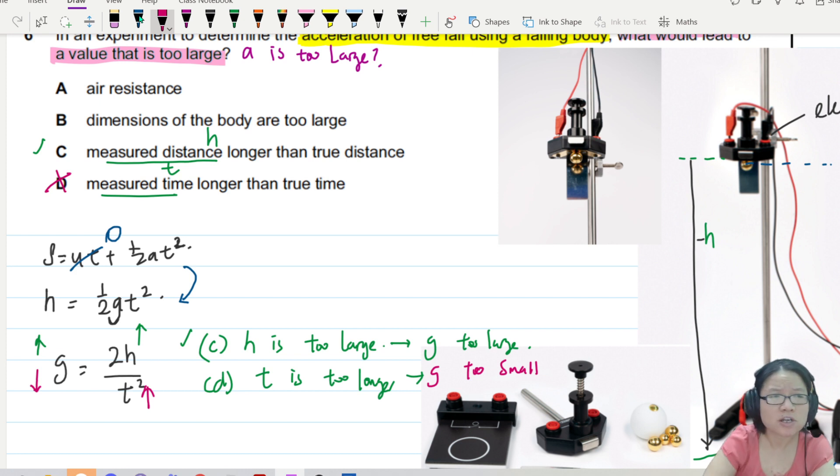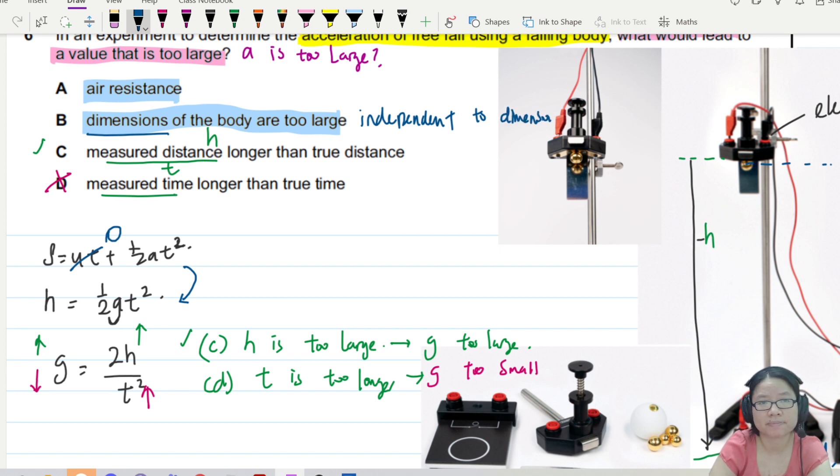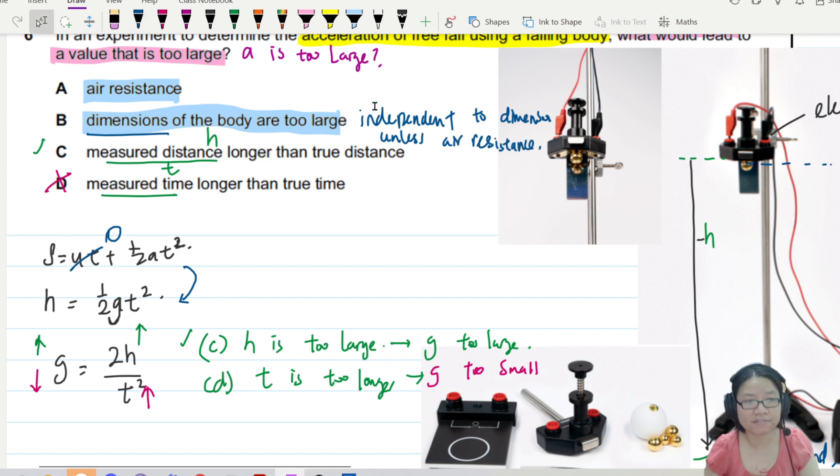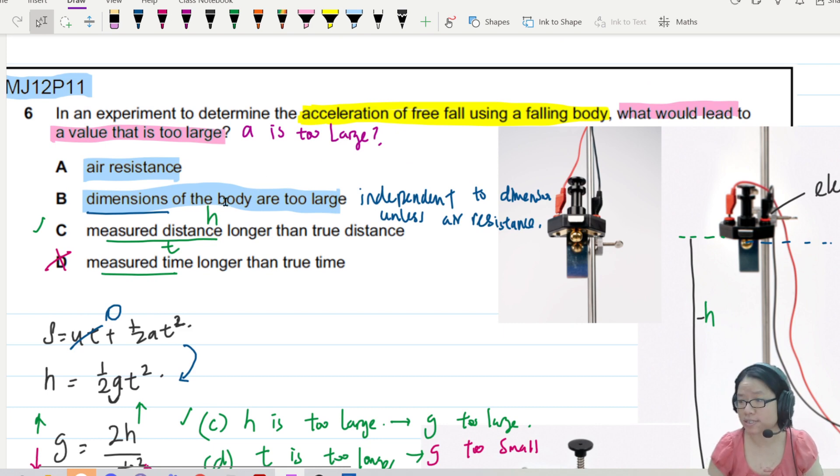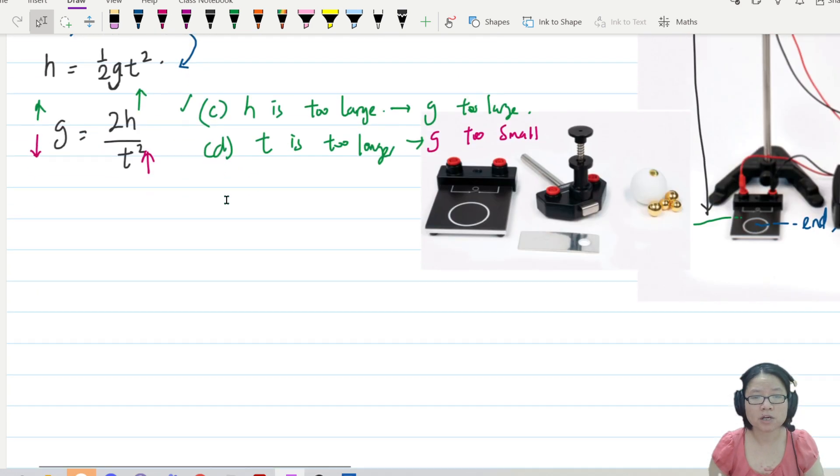What about A and B? So A and B has something to do with air resistance. Because the dimension of the body will not affect how quickly it falls, unless there's air resistance. So free fall is independent to the dimension of the body, unless there is air resistance. Then certain types of shapes, certain types of diameter will have more air resistance. And even if so, when the dimension is large, air resistance increases.